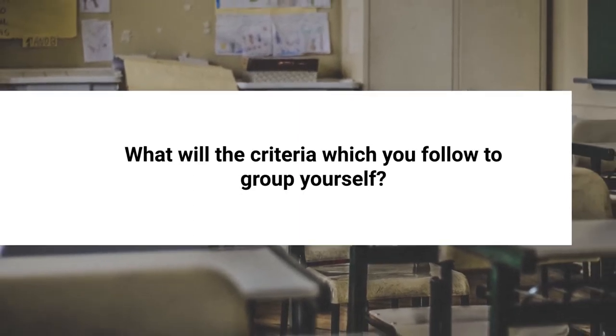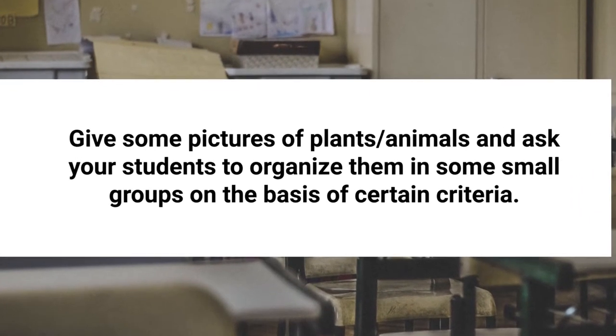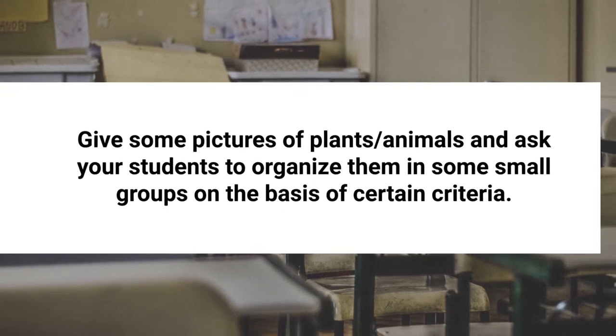Let learners try to answer these questions and understand why they have been distributed into different groups, classes, or sections, and what criteria a teacher follows when placing a student in a group. You can do other types of activities too, like giving pictures of plants and animals to your students and asking them to organize these into small groups on the basis of certain criteria.